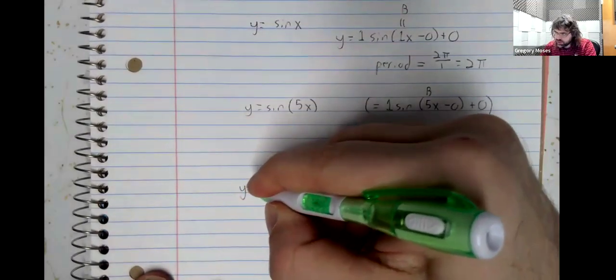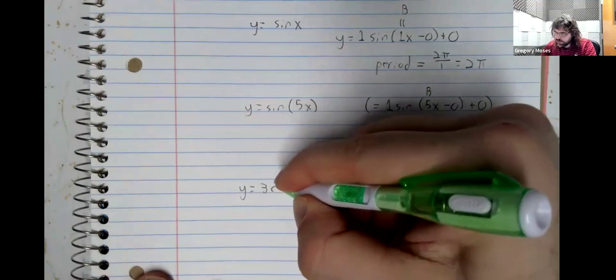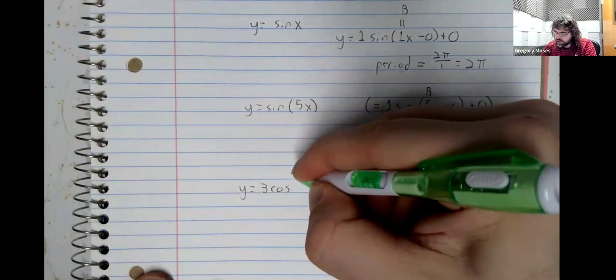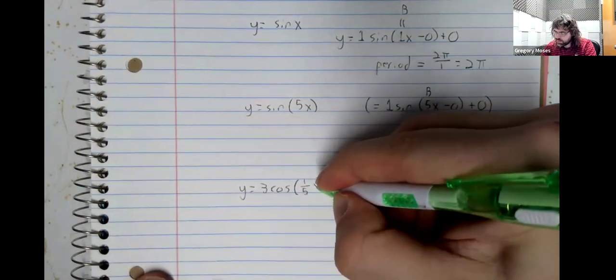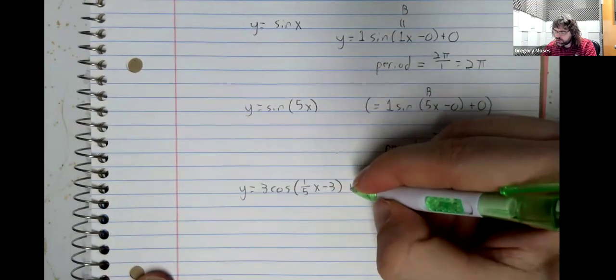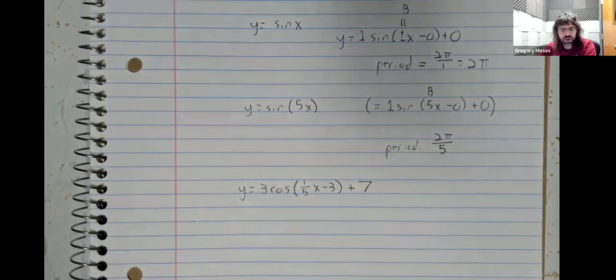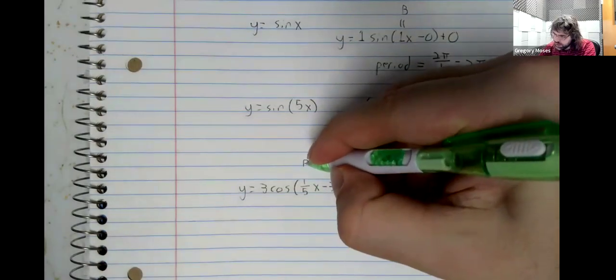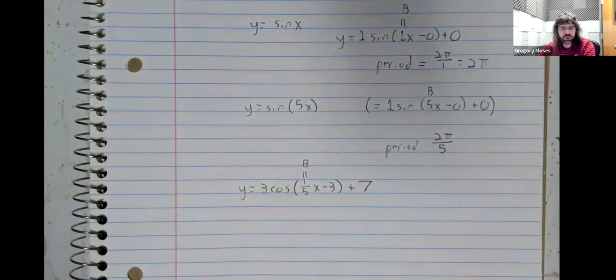Finally, and just for variety, let's use cosine and write down a sinusoidal function. If we're interested in the period, it's controlled entirely by that B.